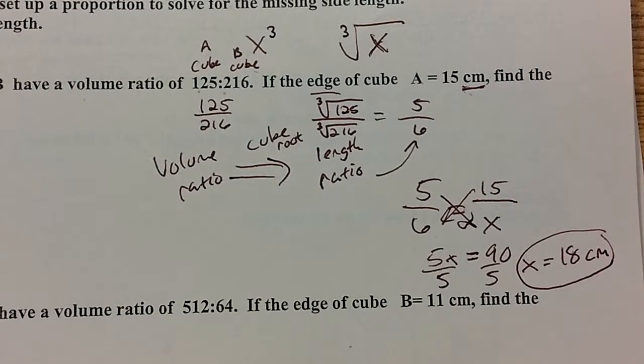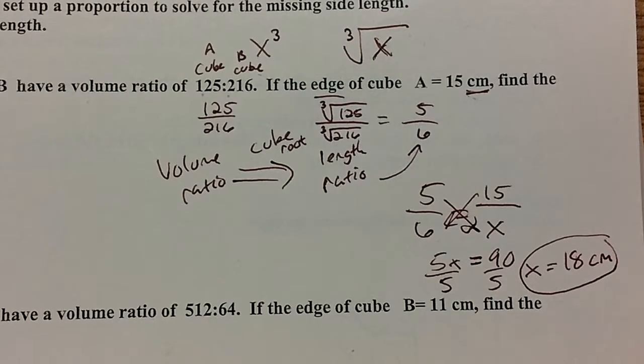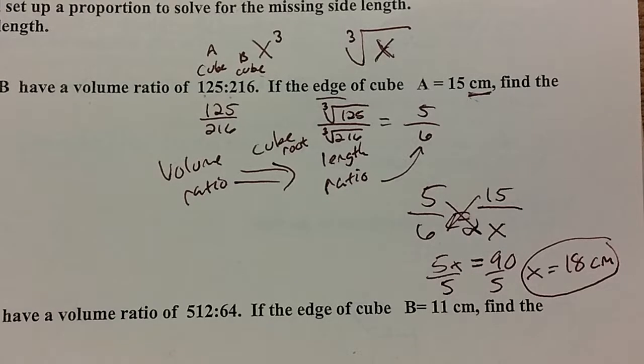Very similar to the area proportions. Instead of square or square rooting, here it's cube or cube rooting because we're dealing in a third dimension, volume. Area was two dimensions, so it's square or square root. And volume, three dimensions, cube or cube root. So powers of three.